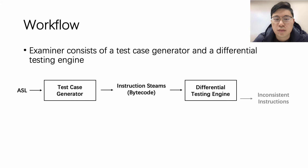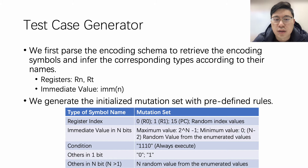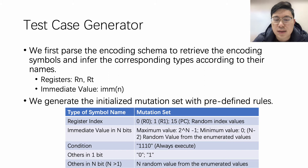The test case generator first parses the encoding schema to retrieve the encoding symbols. We can infer their types according to their names; for example, RN and RT usually represent registers, while symbol names starting with IMM usually represent an immediate value. After that, we initialize the mutation set with predefined rules. For a register index, we include the PC register, R0, R1, and random index values. R0 and R1 represent return values for function calls, while PC can explicitly change the execution flow. For immediate values, apart from random values, we also include the maximum and minimum boundary values in the mutation set.